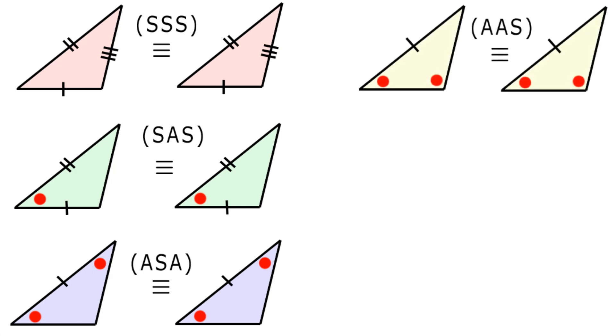Condition 4: AAS. Two angles and one side are the same. Two angles in the first triangle are equal to two angles in the second triangle, but the common side is not between the angles. It is similarly located on both triangles.